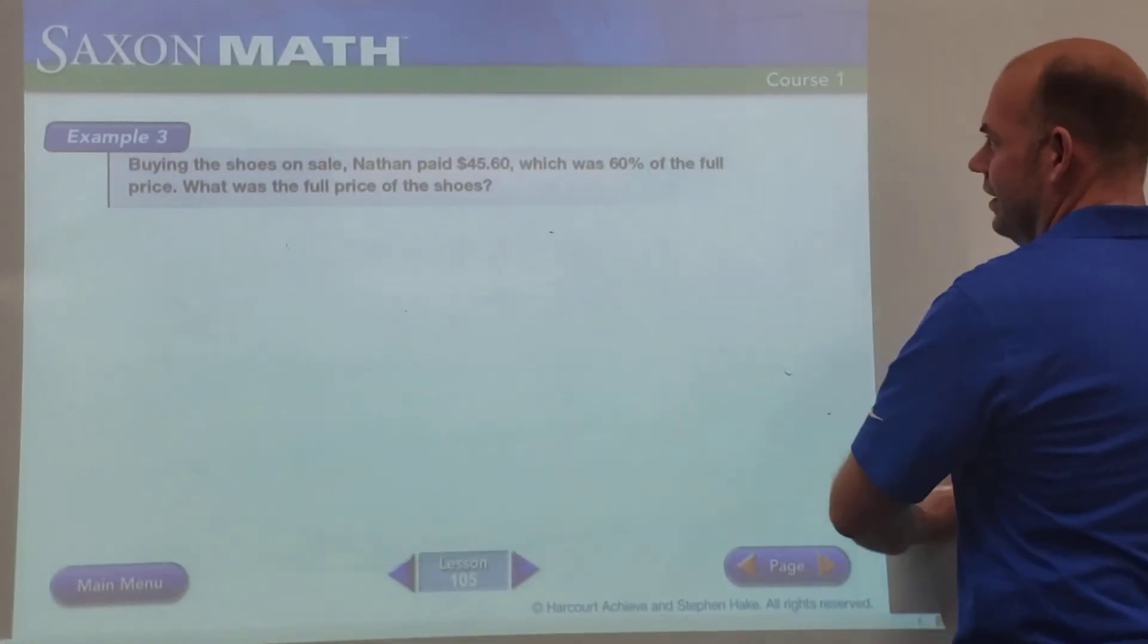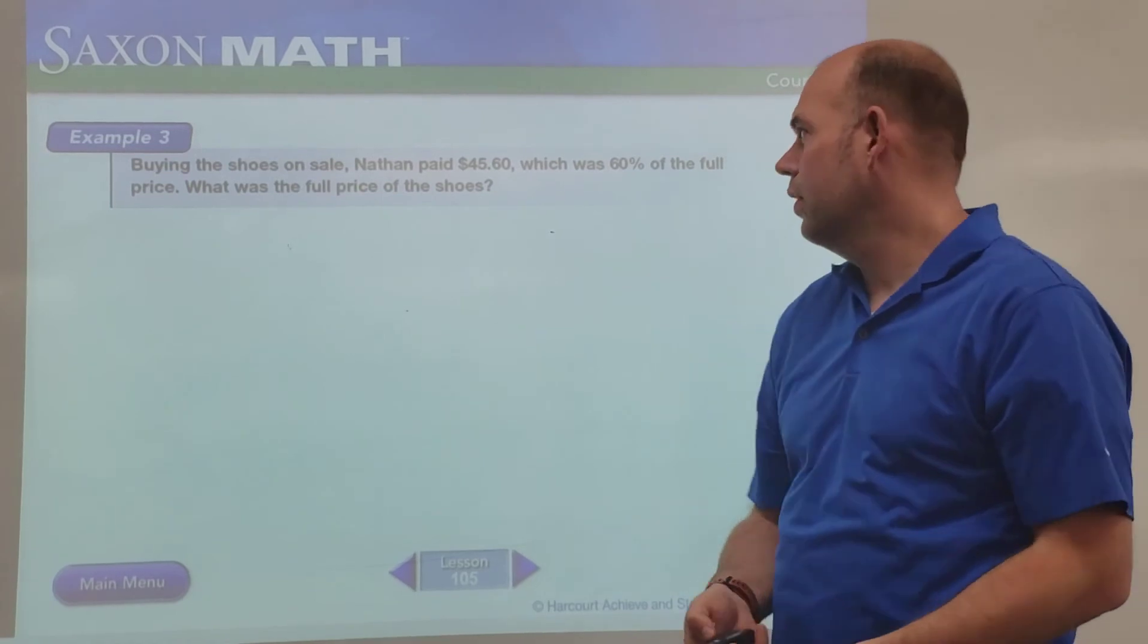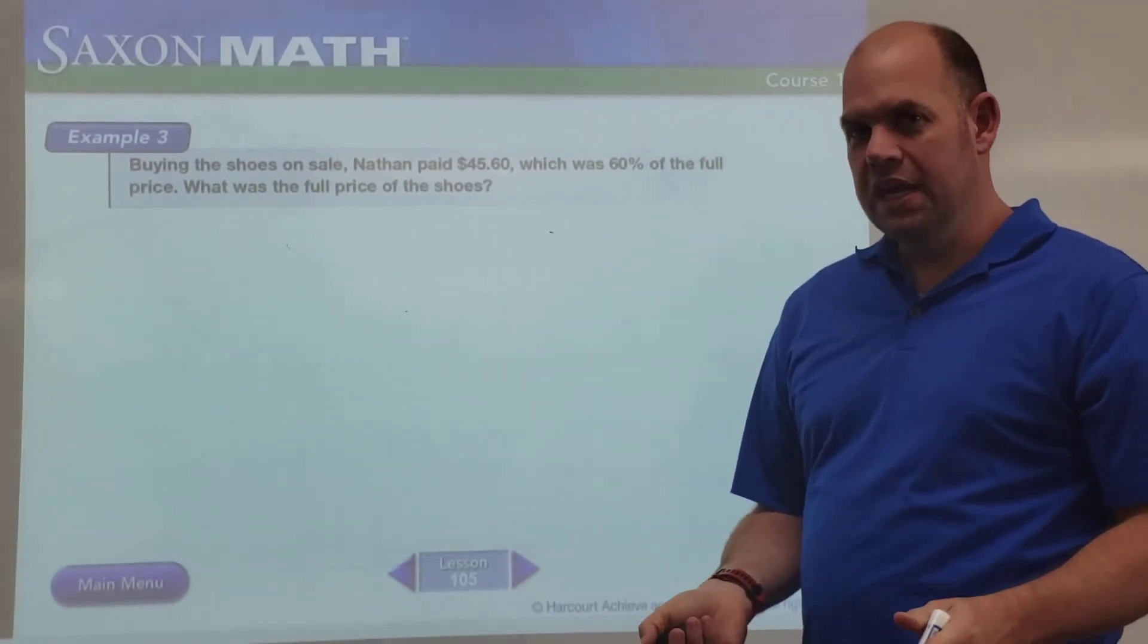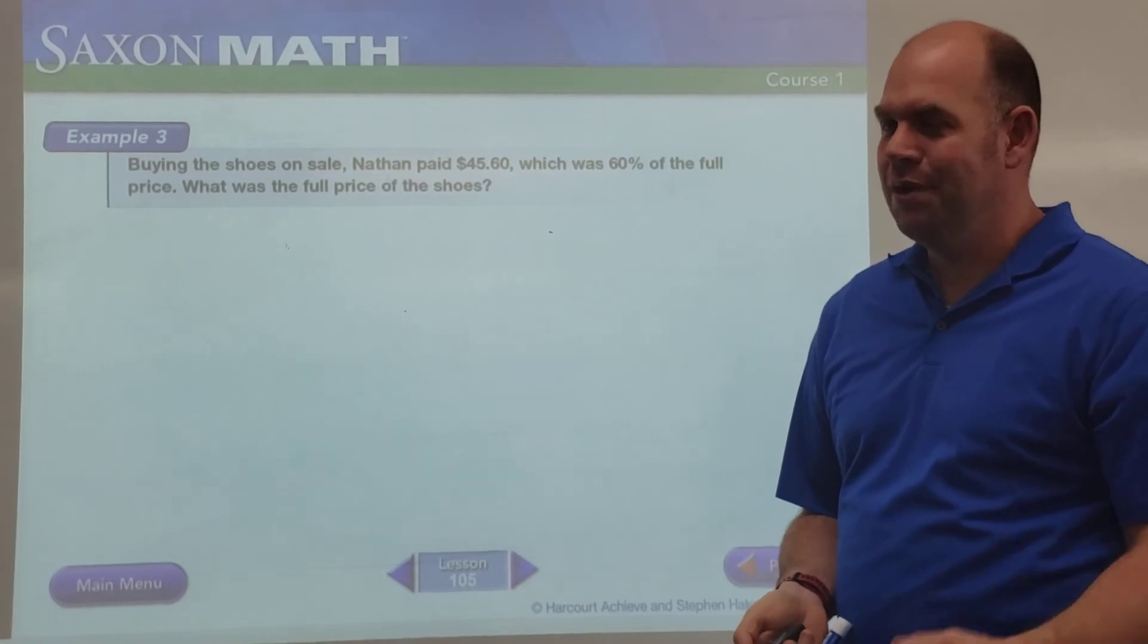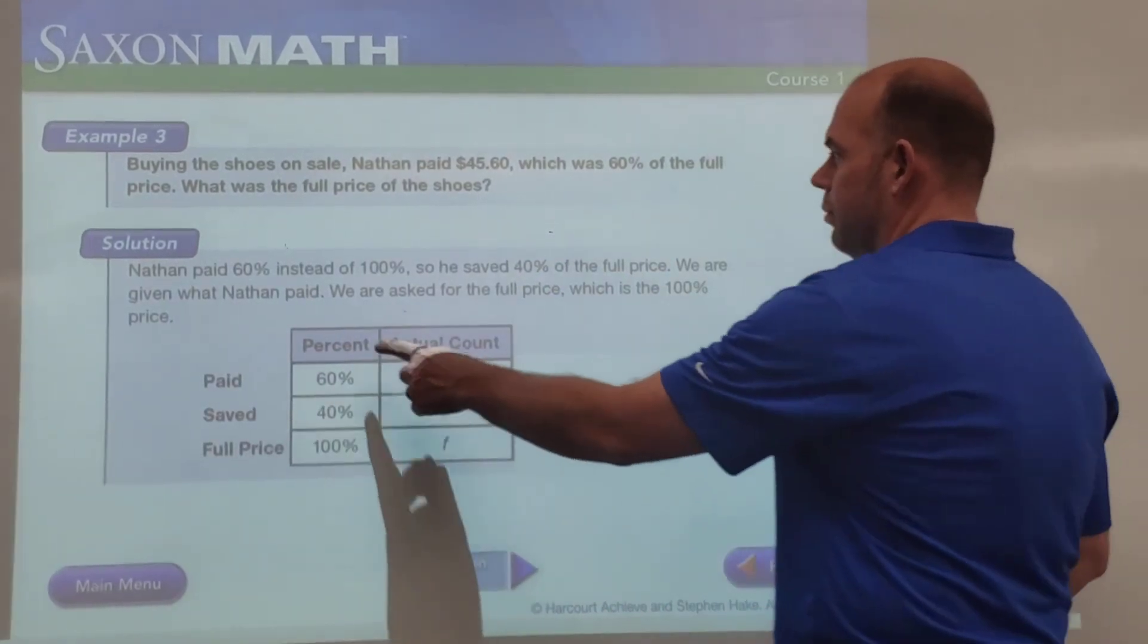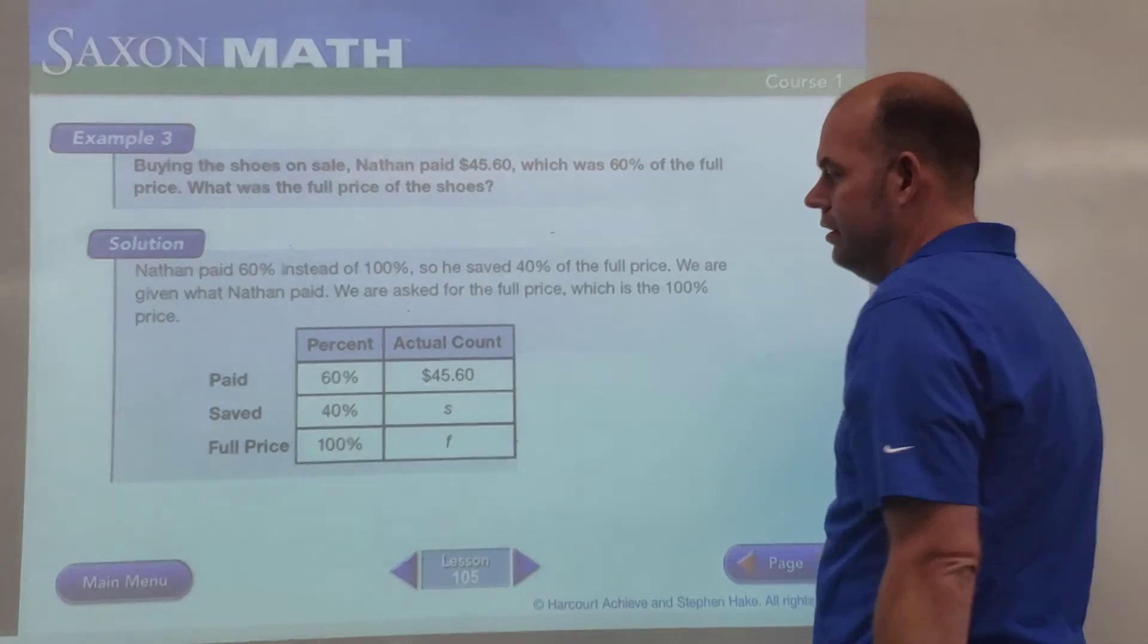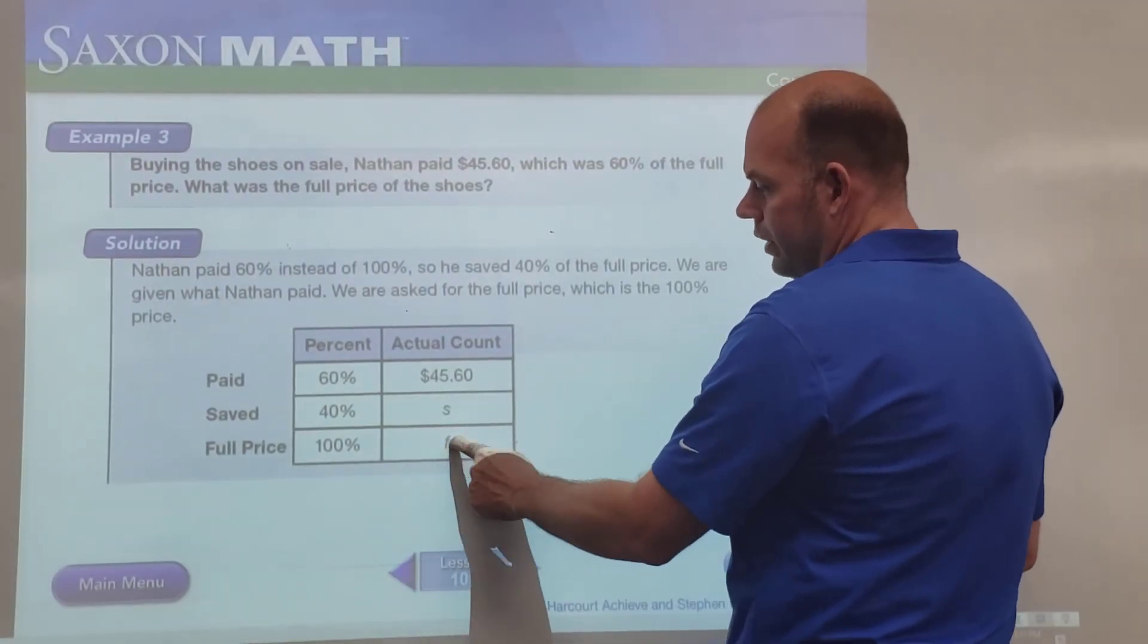Buying the shoes on sale—Nathan. Oh, this is a good one; these are the kinds of problems that we do a lot. So if you paid $45.60, which was 60% off, what was the full price? And does he need to know the full price? Probably not, but when you get a really good deal on something, do you want to know how much the original price was? Yeah, so this is kind of cool. So we take our table. We take our 60% and our 40% equals 100%. He paid $45.60; that was at 60%, so now we're solving to see what he saved and what the total price is.